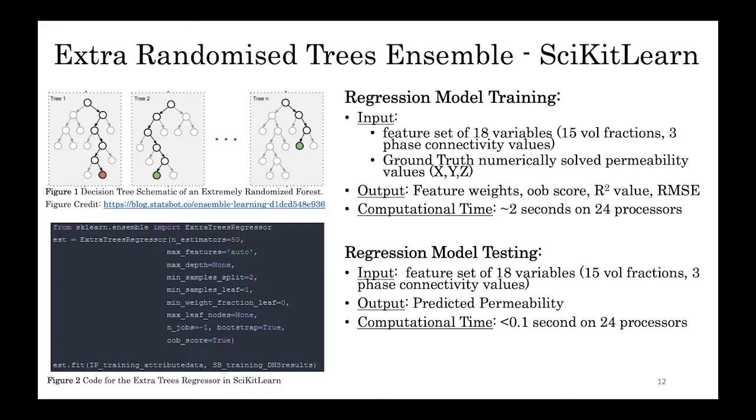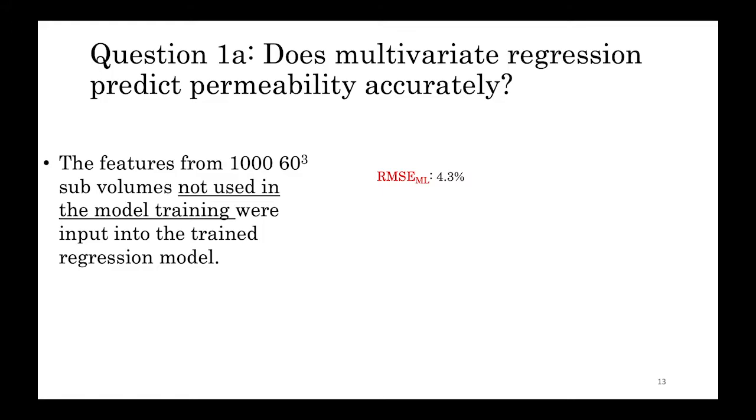The extra-randomized trees ensemble works the same way as a random forest where the features are randomly seeded in the model as stumps, except that the features incorporated into the weighting of each split is also random, which results in less computational expense. So we use the majority of those solved permeabilities to train our regression model, but we held back a thousand for testing.